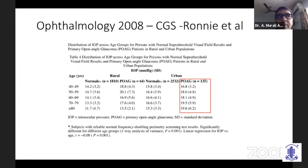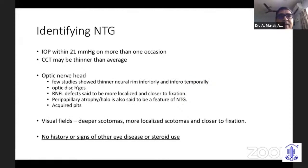The key take-home is that intraocular pressure is a risk factor — don't base the diagnosis of glaucoma on IOP alone. To identify NTG: IOP within 21 mmHg on more than one occasion with diurnal phasing is ideal. Central corneal thickness may be thinner than average. The optic nerve head may show a thinner neuroretinal rim inferiorly. Optic disc hemorrhage is typical, RNFL defects are more localized and closer to fixation, and peripapillary atrophy is a recognized feature.